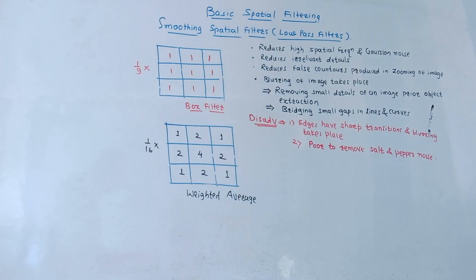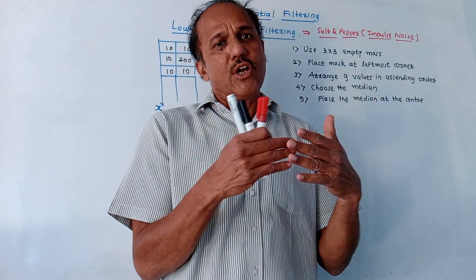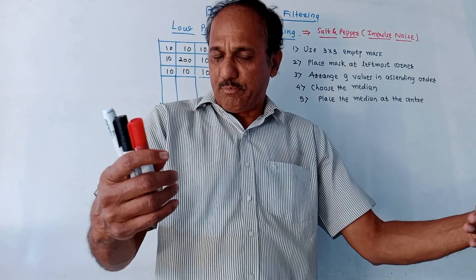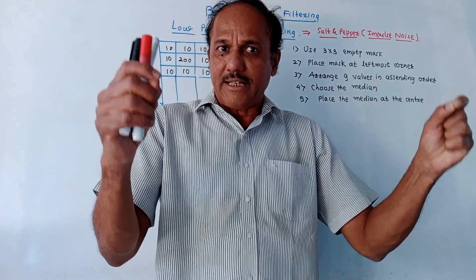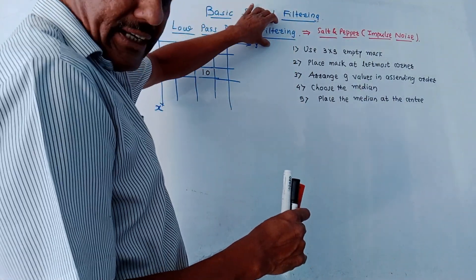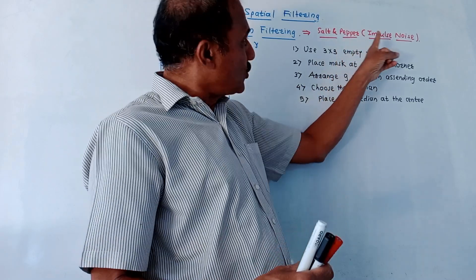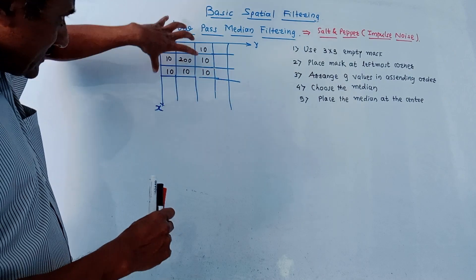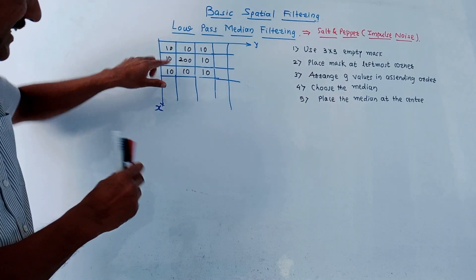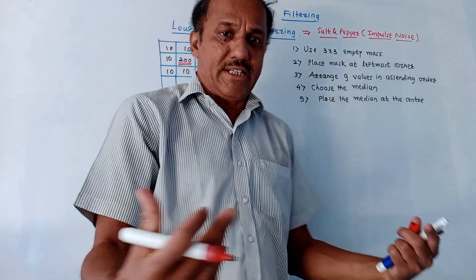The next type of filter is the low-pass median filter. In the averaging filter we discussed, blurring occurs which is required in pre-processing, but the major drawback is that blurring of edges also takes place. The median filter is used for removal of salt-and-pepper noise, also called impulse noise. We'll consider one example — I have shown some values of an image. Just to avoid confusion, I have written only a few values. The center value is 200, which indicates salt-and-pepper noise — that means it is called impulse noise, and we want to remove this value.